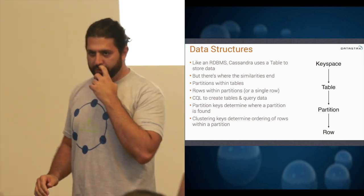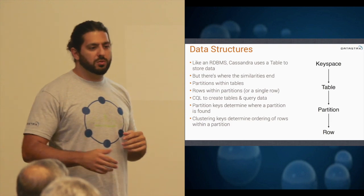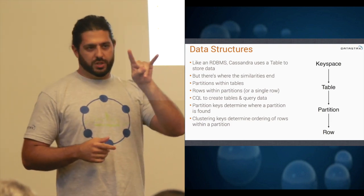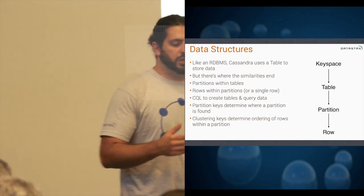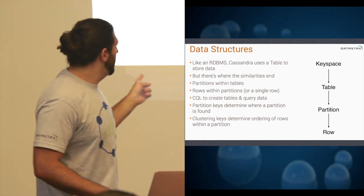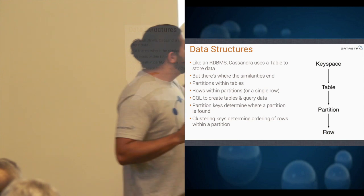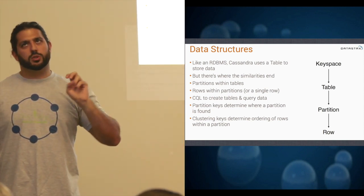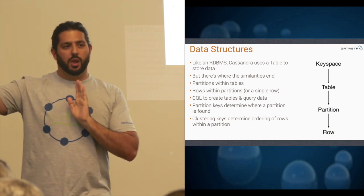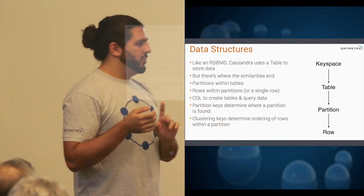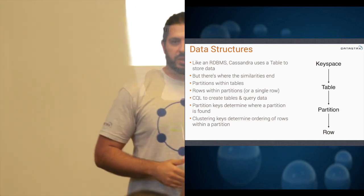The partition key is the first part of your primary key, which determines where the data is found in the ring. In a simple scenario, if you just have a single partition key — let's say it's a user ID — your data will hash to a point in that ring based on the user ID, and that's where it lives. There's something called clustering keys, which allows you to put multiple rows inside a single partition. The important thing to note is that a partition is really similar to how a row would exist in a relational database — everything is together. The benefit of the clustering key is that you can make multiple rows appear next to each other on disk for performance.